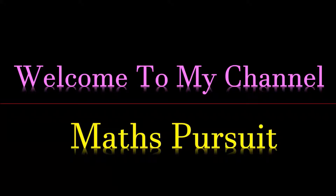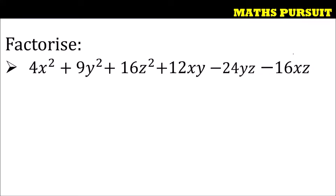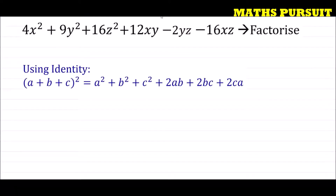Welcome to my channel Maths Pursuit. Today we will look into questions from the chapter called polynomials. The given question is: factorize 4x² plus 9y² plus 16z² plus 12xy minus 24yz minus 16xz. Let us see how we can factorize the given expression.